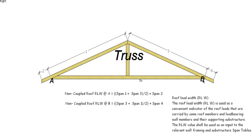Now if you do B then we'd be doing span 3 plus span 1 divide that by 2, and then add on span 4 to get our RLW at B. Remember we have to work out and find out what the greatest RLW is for our roof and then use that the whole way through. So that's for a truss roof.